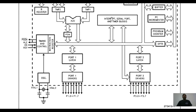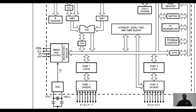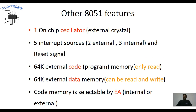The other peripheral blocks include interrupt, serial port, and timer blocks. The remaining two ports are available with their port drivers for interfacing external devices to 8051. We also have an oscillator block to which an external crystal is connected, generating the clock signal for the CPU. The timing and control block generates different waveforms required for transmitting data. This completes the internal architecture of 8051.